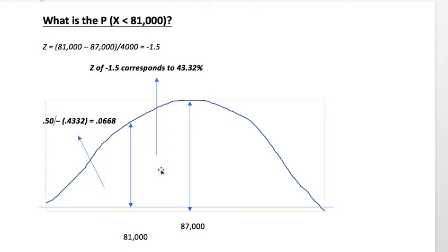So, let me just repeat, we know that we go negative 1.5 Z's, that corresponds to that area, 43.32%, from table D.